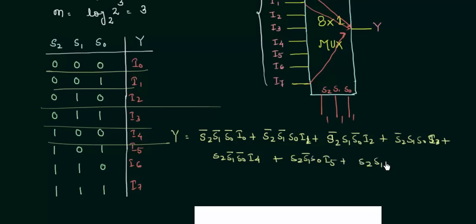S2, s1, s0 complement, i6. And in the last case, s2, s1, s0, i7.